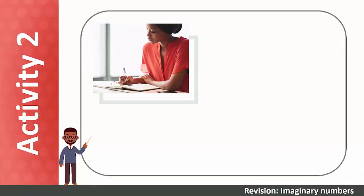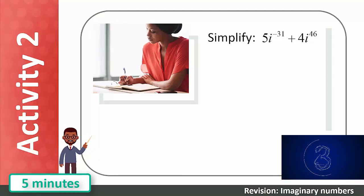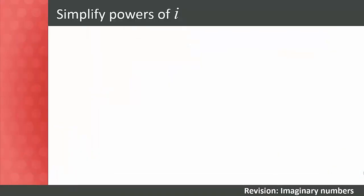Now work through this example on your own: simplify 5i^(−31) + 4i^46. Let's work through the solution together.